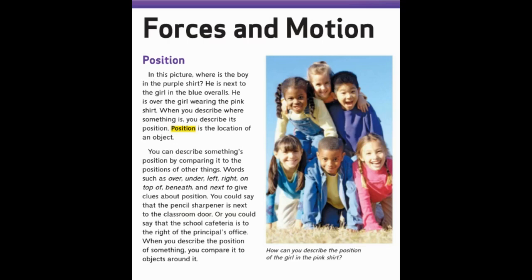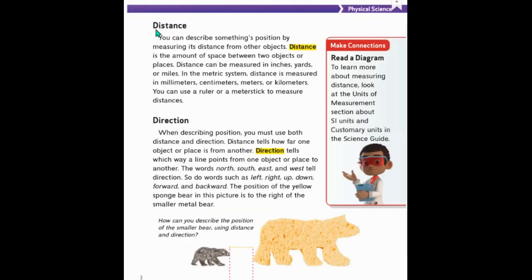How can you describe the position of the girl in the pink shirt? Now let's read about distance. You can describe something's position by measuring its distance from other objects. Distance is the amount of space between two objects or places. Distance can be measured in inches, yards, or miles. In the metric system, distance is measured in millimeters, centimeters, meters, or kilometers. You can use a ruler or a meter stick to measure distance.